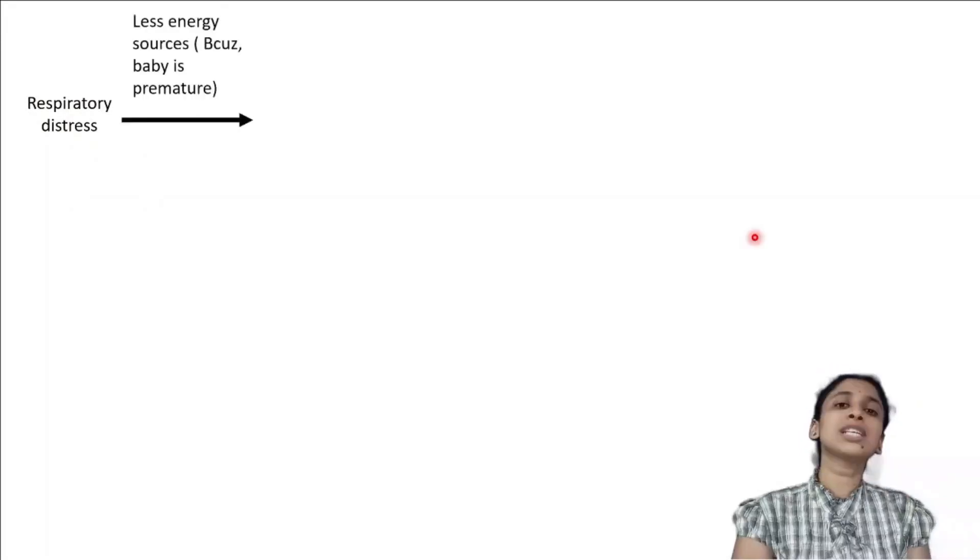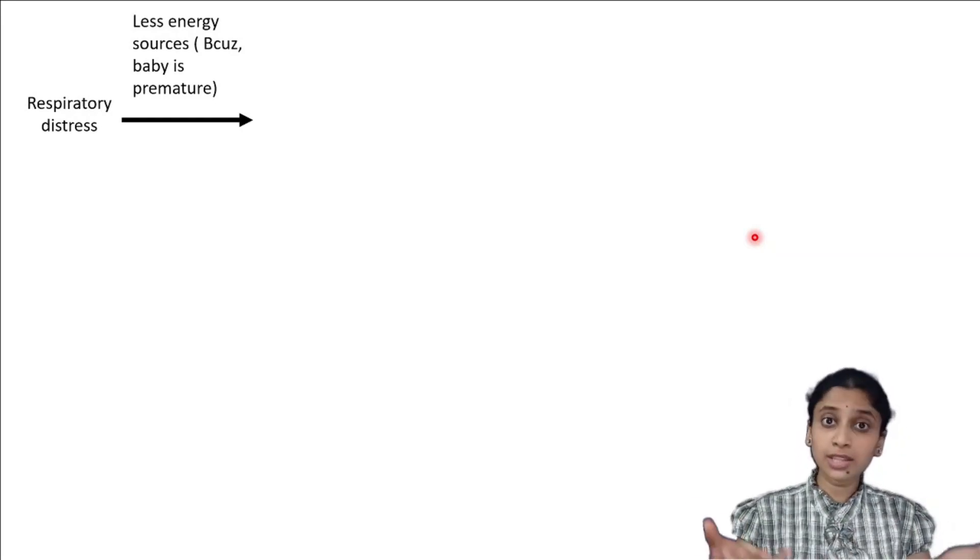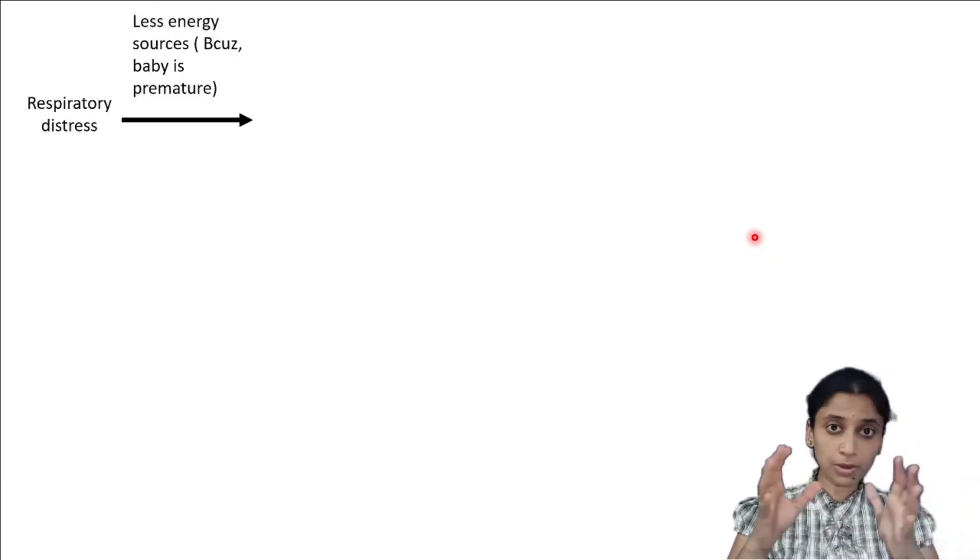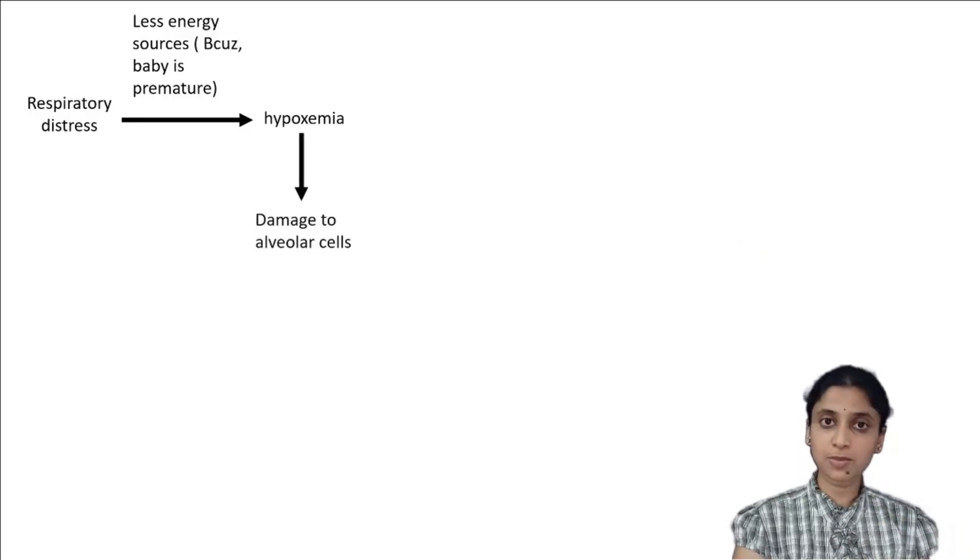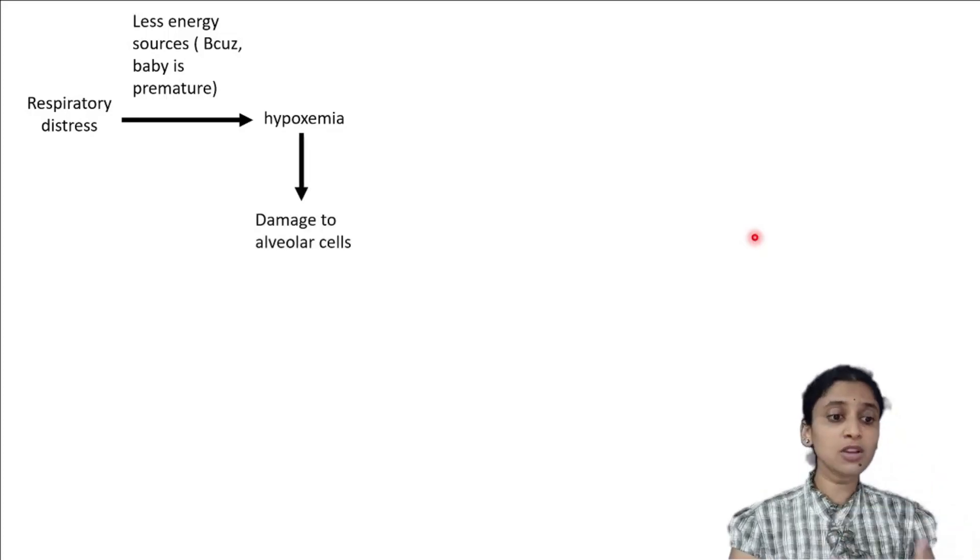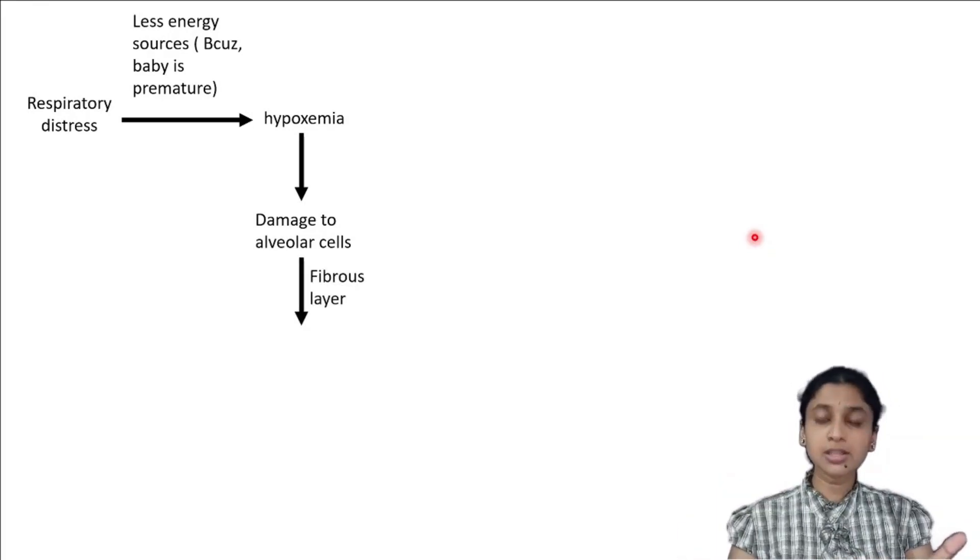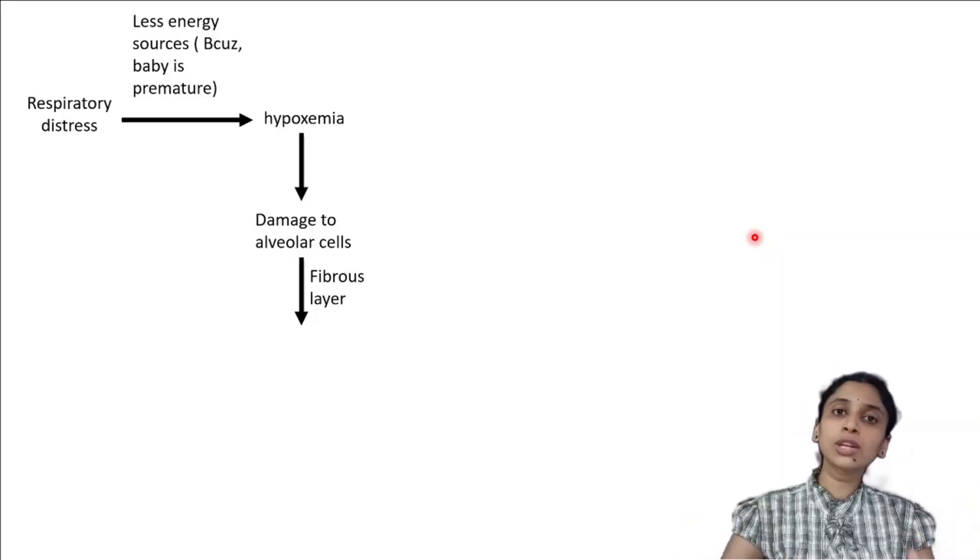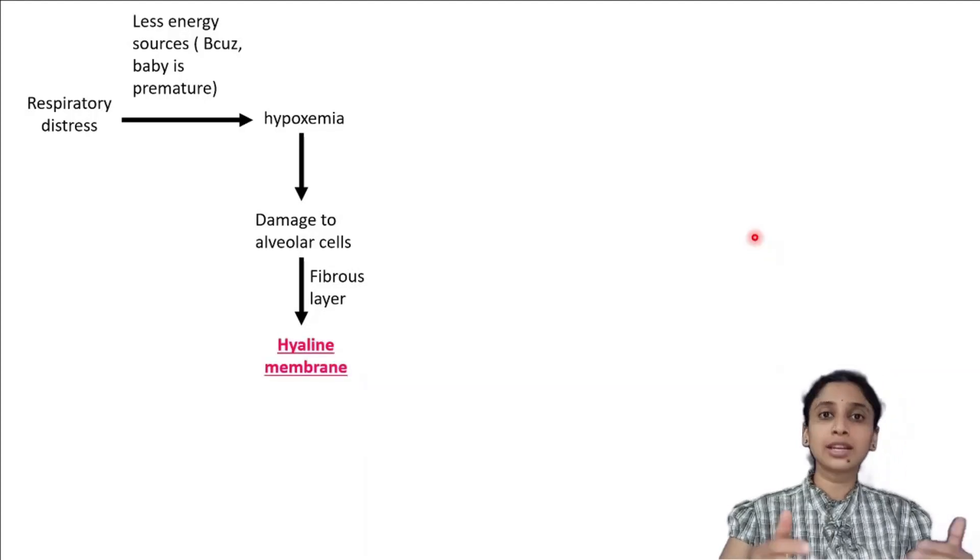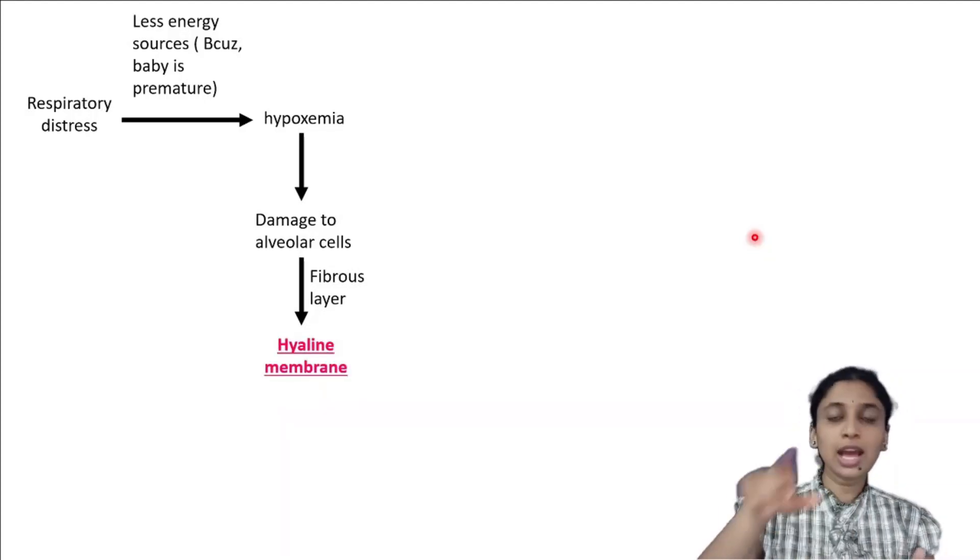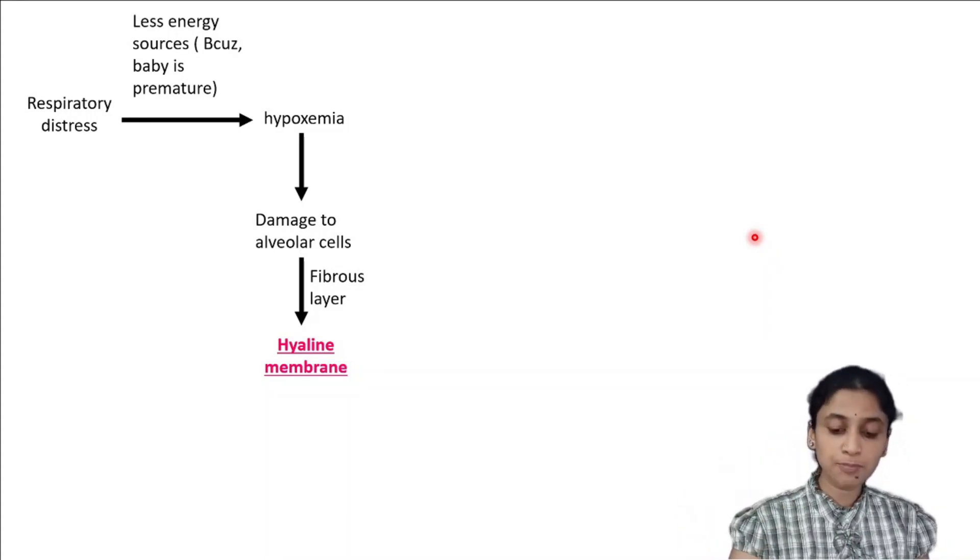The respiratory distress coupled with prematurity - in prematurity there will be less glycogen stores, meaning less energy. So respiratory distress coupled with less energy results in hypoxemia. Hypoxemia can cause damage to the alveolar cells, and this damage results in death of several cells. There will be futile efforts of healing which results in fibrosis. This is why there is hyaline membrane formation within the alveolus.